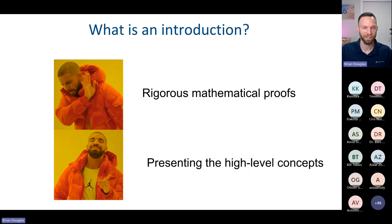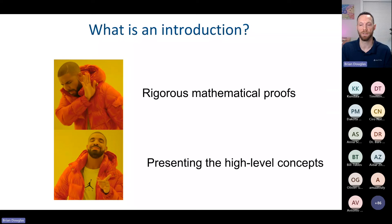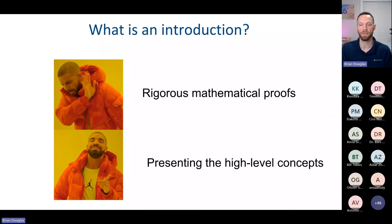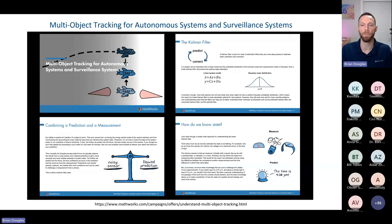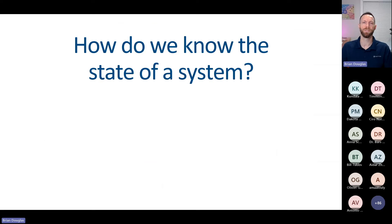Here's the way I think about it now and the way I wish I had been introduced to the topic. It starts with just an introduction — not rigorous mathematical proofs or detailed information, just presenting the concept at a high level. The student doesn't even need to know that math is involved. For example, I wrote an e-book for MathWorks called Multi-Object Tracking for Autonomous Systems and Surveillance Systems. The first several pages introduced the Kalman filter by starting with a question: how do we know the state of a system? How do we know how fast our car is going, or the voltage of an electrical circuit, or what time it is?